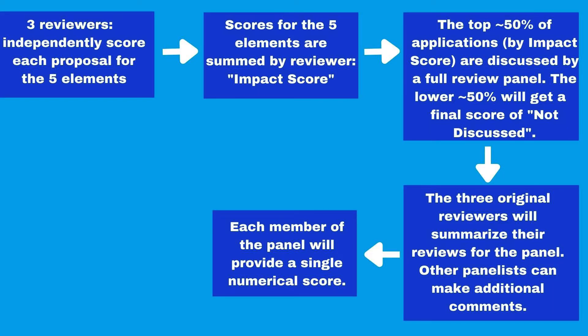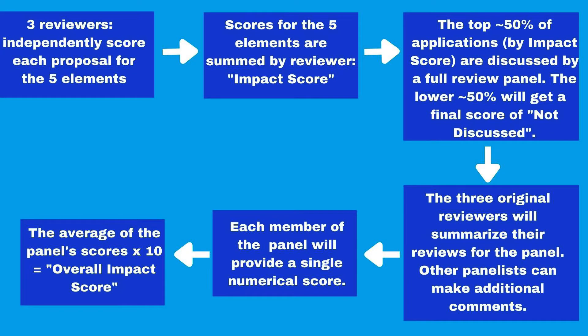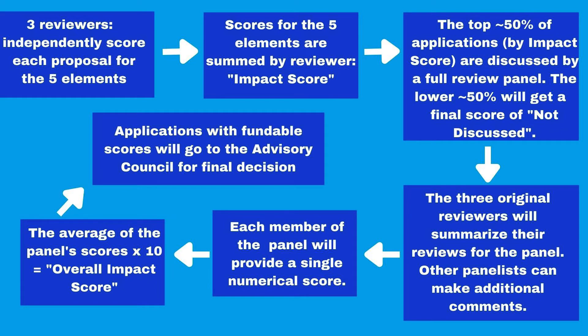After the discussion, all panel members provide a single numerical score for that proposal — again, from one being the best to nine being the worst. The average of the panel's scores is then multiplied by 10, giving you an overall impact score. The best possible score is a 10 and the worst is a 90. All discussed proposals are ranked by impact score, and applications with fundable scores go to the next round: the advisory council, where the final decision on yes or no for funding is made.